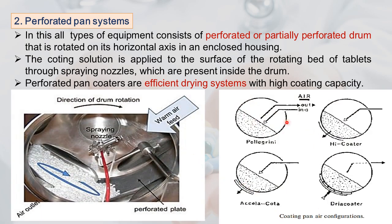In the Pellegrini pan there was a single opening for air inlet and exhaust, whereas in perforated coating pans, heated air comes from one pipe, passes through the tablet bed, exits through perforations in the drum, and the exhaust is on the other side. Heated air passes completely through the tablet bed, enhancing drying efficiency. The Hi Cota has perforated ribs with exhaust from the center or back of the pan.